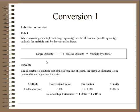There's one rule for conversion. When you're going from larger to smaller quantity, you multiply by the conversion factor. So for instance, if I'm going from kilometers, I recognize that a kilometer is a larger unit than the SI unit, which is a meter. So if I'm going from larger to smaller, I multiply by a factor. So if I have one kilometer, I multiply by a factor of a thousand, and that gives me a thousand meters.